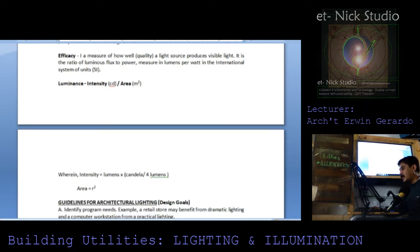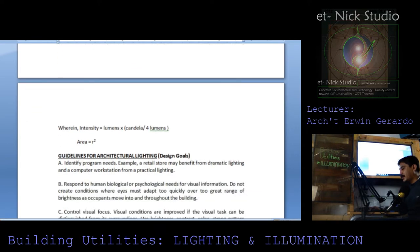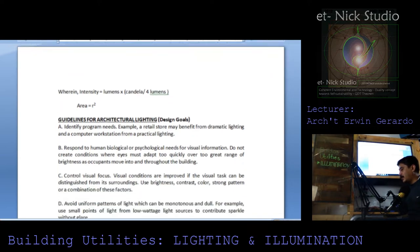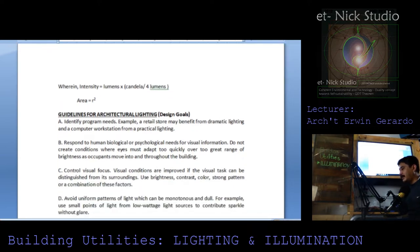Luminance is intensity per area, where intensity equals lumens multiplied by candela divided by 4π lumens. This is the formula. Area equals R squared.